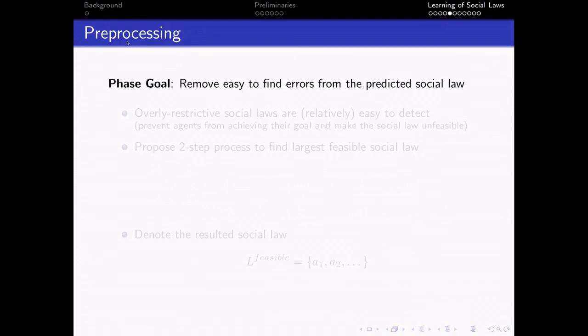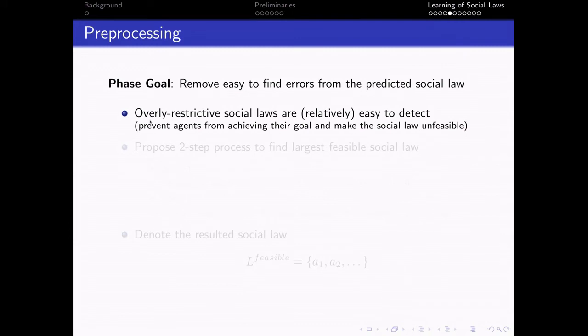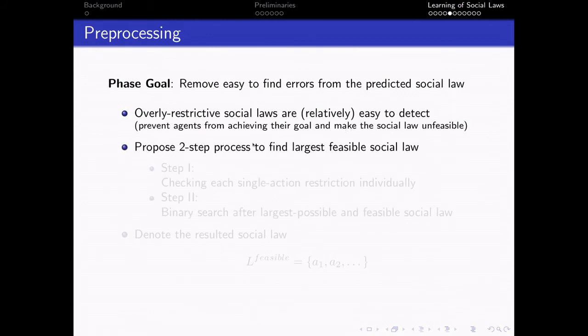In the preprocessing phase, we remove easy-to-find errors from the predicted social law. And this is based on the fact that overly restrictive social laws are relatively easy to detect because they prevent agents from achieving their goal and make the social law unfeasible.